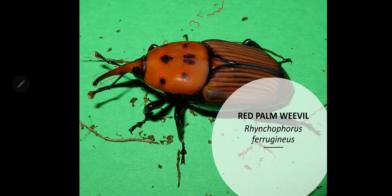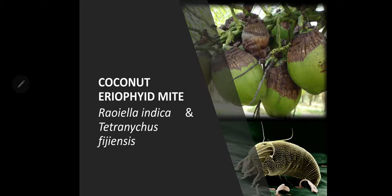Another pest is the eriophyte mite. It belongs to order Acarina, family Eriophyidae. It is a major threat to coconut since it directly infests the nuts. It makes triangular pale or yellow patches close to the perianth initially, which turn into brown patches on the nuts. Shedding of buttons, gummy exudations from the affected nuts, and hardened cracks on the nuts are observable symptoms.